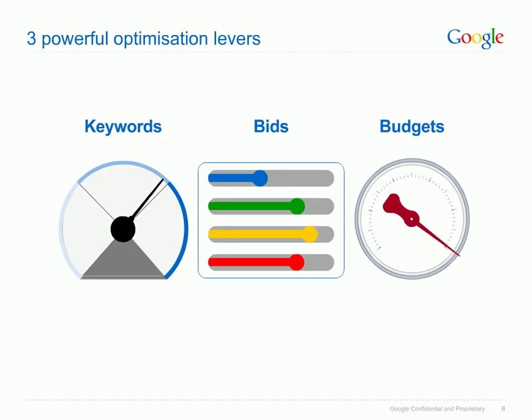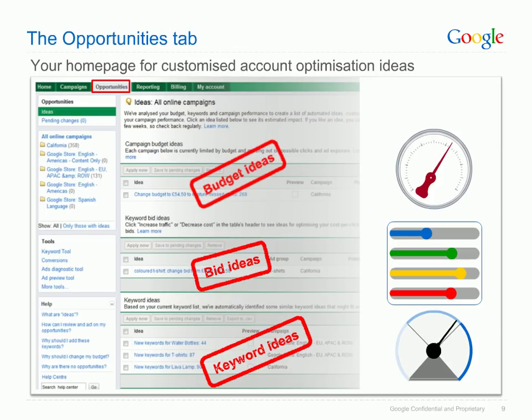There are three important optimization levers. Keywords — it's hard to stay on top of your keywords because of the new ways in which users are searching. Bids — how should you bid competitively while keeping your business goals in sight? And budgets — how can you set your budget to capture traffic while keeping an eye on spending? The Opportunities Tab is designed to help you optimize these three aspects of your account.